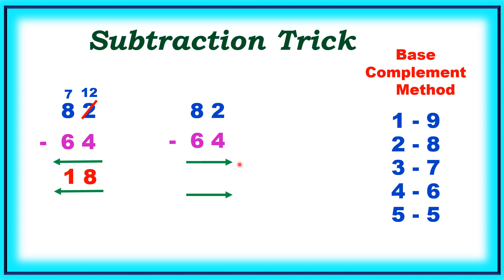In Vedic Maths, we are subtracting from left to right. 8 minus 6 equals 2. Now you cannot subtract 4 from 2. Hence you reduce this number. 2 will become 1.